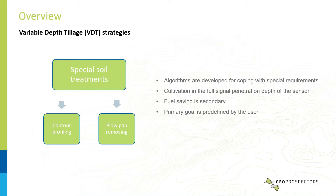It is important to highlight that all the variable depth tillage programs can be used online — meaning the topsoil mapper is attached to the tractor and controls tillage on the fly — as well as offline, that's the map-based mode, where we calculate tillage parameters based on earlier scans. Setting up the online scene and the prescription map follows exactly the same procedure and function.